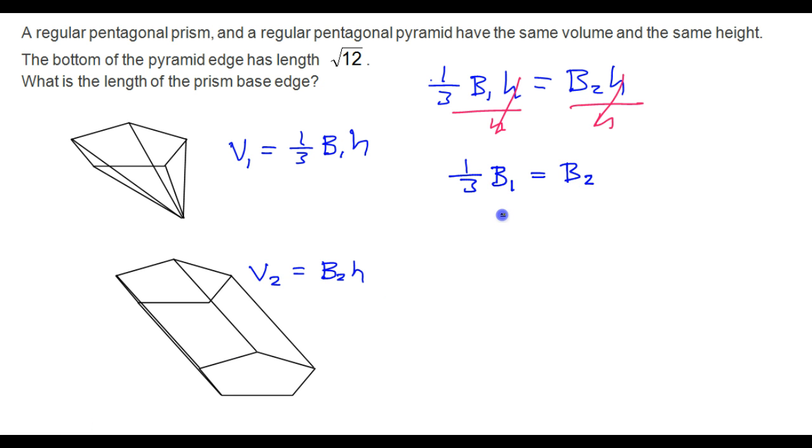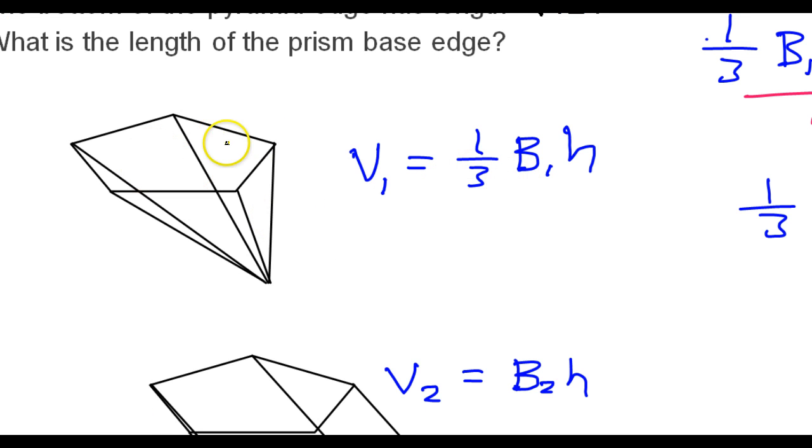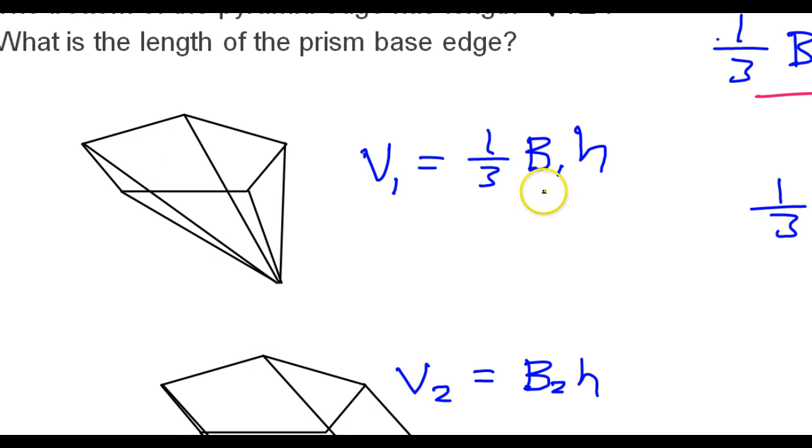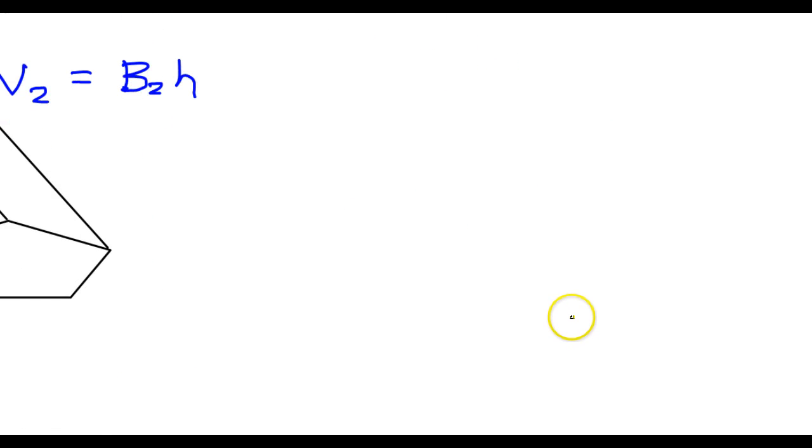Now the thing is we need to know something about the area of a pentagon. I just googled it and it seems like this is the formula for the area of a regular pentagon where small a here is the length of a side. Focus on the area of the base of the pyramid B1. It is a regular pentagon so we should be able to use that formula that I was just looking at.